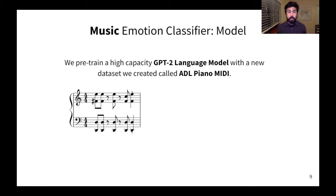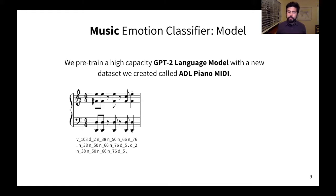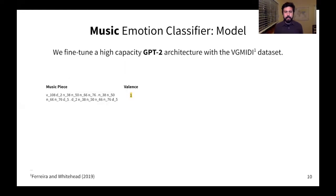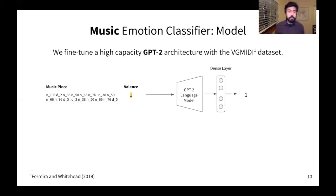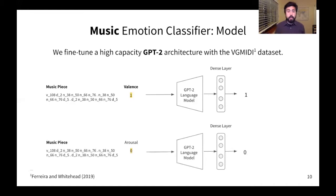In Bardo Composer, we also have a music emotion classifier, and it works similar to the story emotion classifier. But here, we pre-train a high-capacity GPT-2 language model with a new dataset we created, called ADL Piano MIDI. It works by taking music pieces and encoding them as strings using an encoding system that we designed. We then feed those strings into the language model to get the probability of the next token in the sequence. After pre-training the GPT-2 architecture as a language model, we fine-tune it using the VG MIDI dataset. Here we have a music piece with a certain value of valence. We feed it into the language model. We have a dense layer to predict the valence value. And then we also have a copy for the arousal dimension. We combine these two predictions to form the final output.